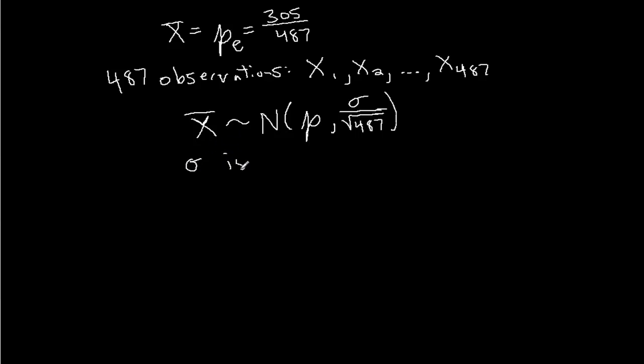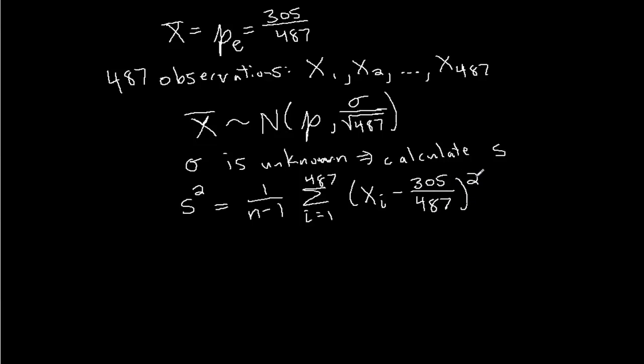So sigma is unknown, which implies we need to calculate s. And as I said in the previous section, from now on in the course, whenever you see s, unless it's otherwise denoted, you're dividing by n minus 1. We're using the unbiased variance. So s squared, we take 1 over n minus 1 times the sum of the squared deviations from the mean. So I have xi minus the sample mean here, 305 over 487, squared.